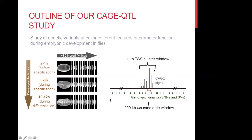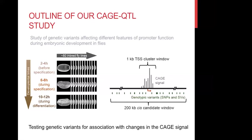After correcting for mappability problems, we obtain what we call the CAGE signal in the promoter window. We define a 1 kb window where we measure the CAGE signal as a phenotype. For each window, we define a candidate region harboring all the variants we test against changes in the CAGE signal — a plus/minus 100 kb window, so a 200 kb total window — and all variants in that window are tested against changes in the CAGE signal.